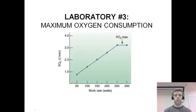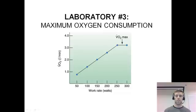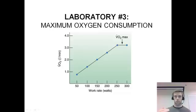This is laboratory number three. We're going to be doing maximum oxygen consumption, also known as VO2 max. Starting on this graph, you can see that we have VO2 versus work rate — the volume of oxygen consumed versus how much work and power the subject is generating. There's a nice linear relationship between VO2 and work rate, up until we hit a plateau. That plateau is our VO2 max, and that's exactly what we're looking for in this lab.